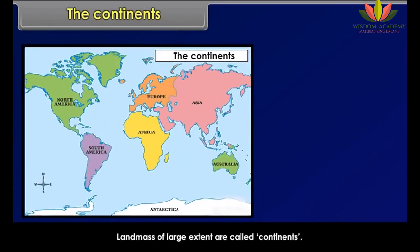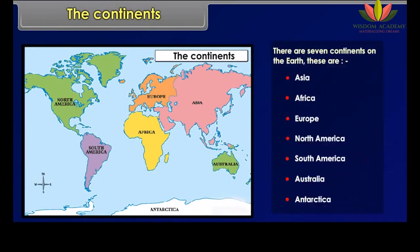Land masses of large extent are called continents. There are seven continents on the earth: Asia, Africa, Europe, North America, South America, Australia and Antarctica.